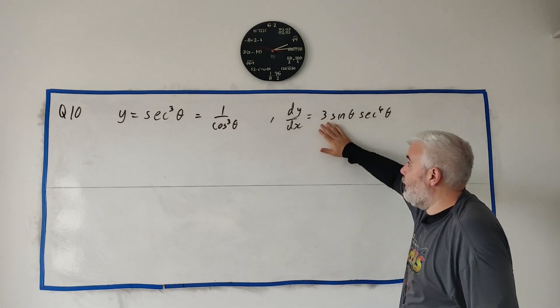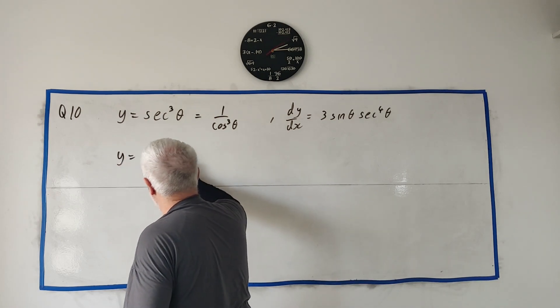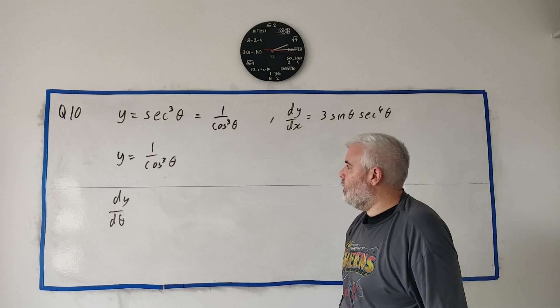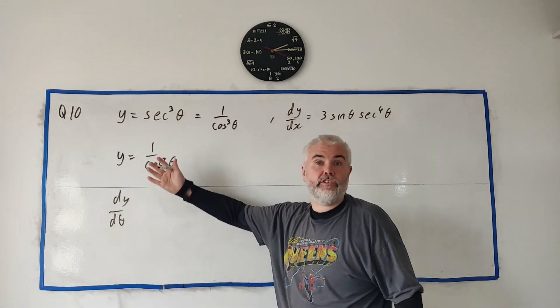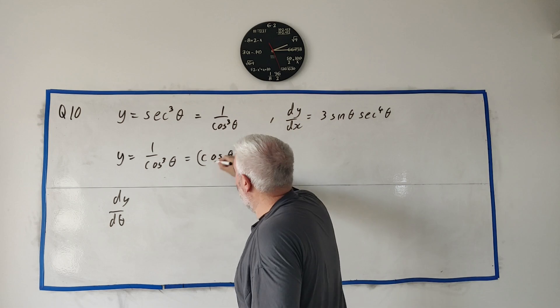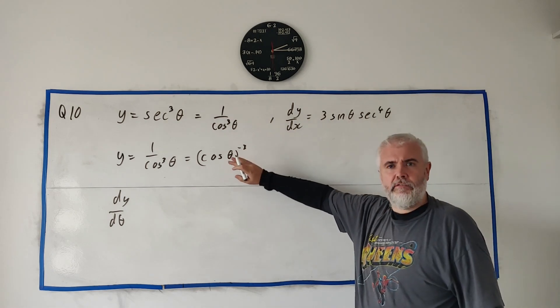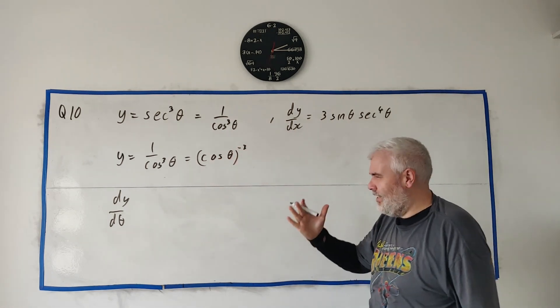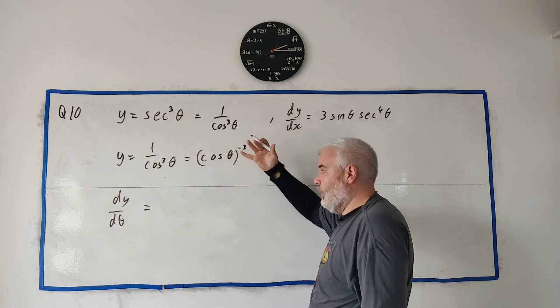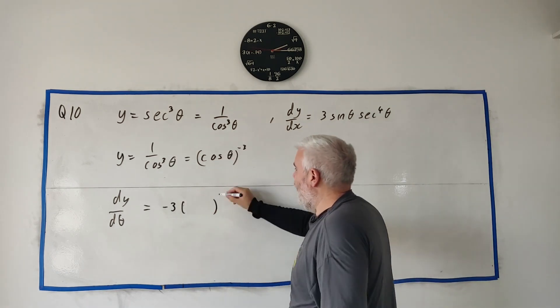We want to differentiate this. I can rewrite this as cosine theta to the power of minus 3. To get the derivative, we use the chain rule. We pretend this is just x to the power of minus 3, which would become minus 3x to the power of minus 4.